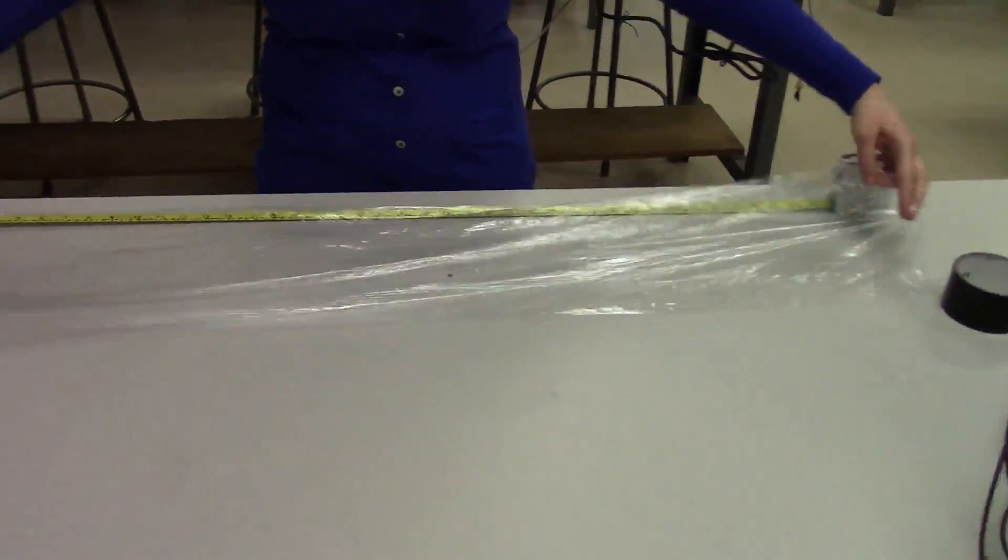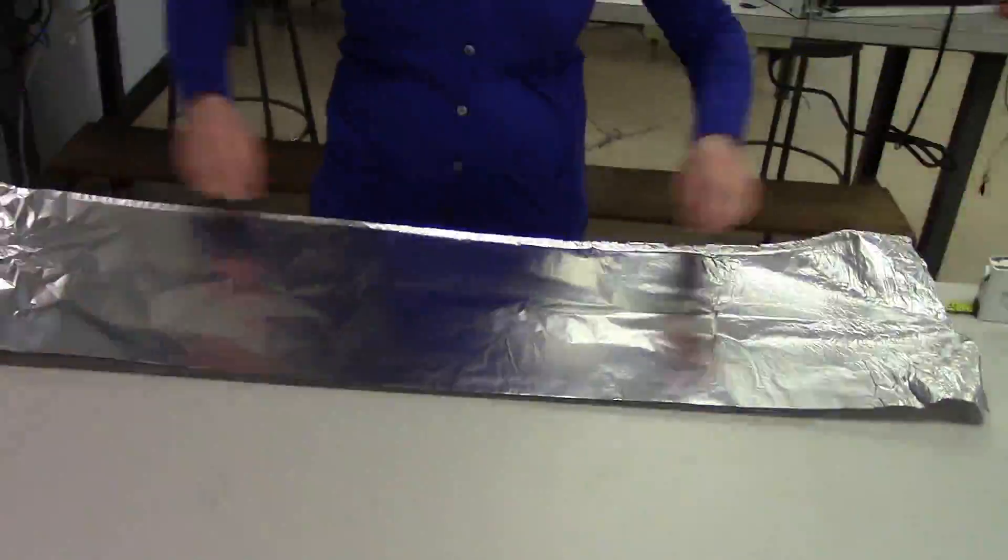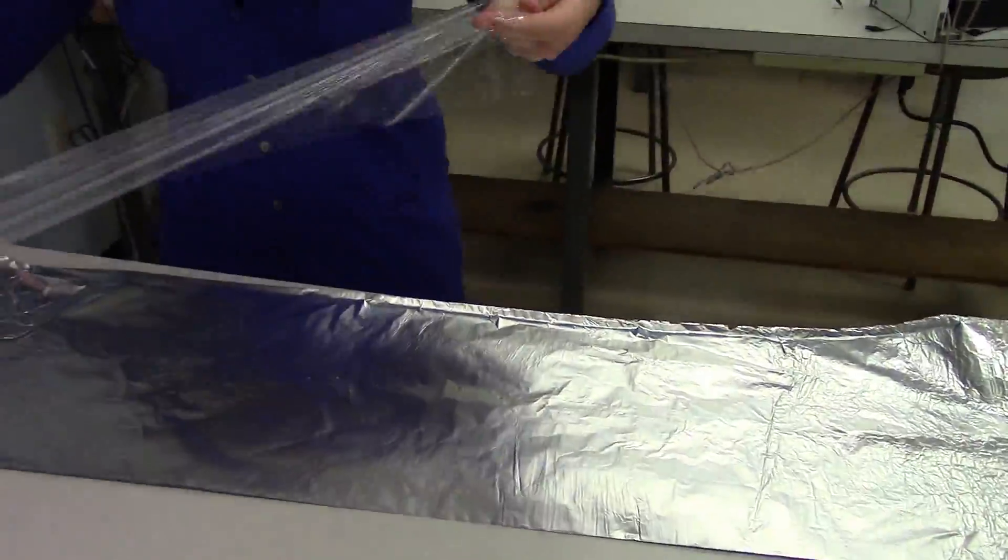Although it doesn't look it, the cylindrical capacitor we used in the demo is actually a parallel plate capacitor. It's made of two conductive sheets separated by an insulator and rolled up.